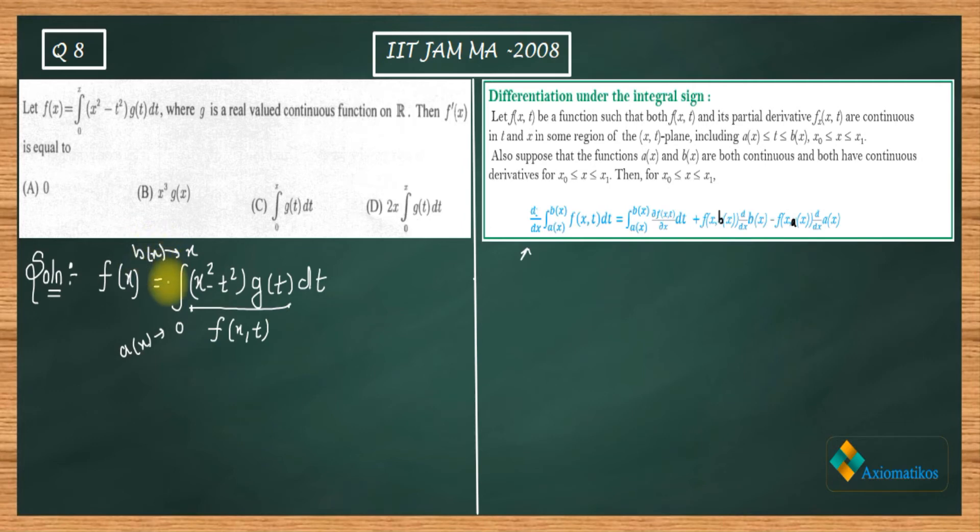Now let us start. It requires many conditions: f(x,t), its partial derivative should be continuous, a(x) and b(x) should be continuous. I am giving this job to you to check yourself why f(x,t) is continuous, why its partial derivative is continuous with respect to x. All the requirements that are needed, it's your job to satisfy those things.